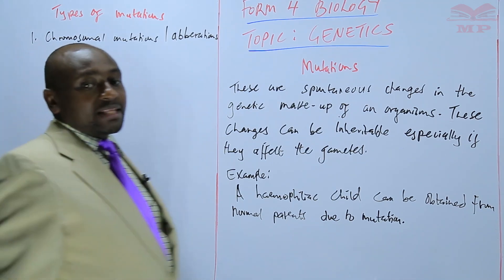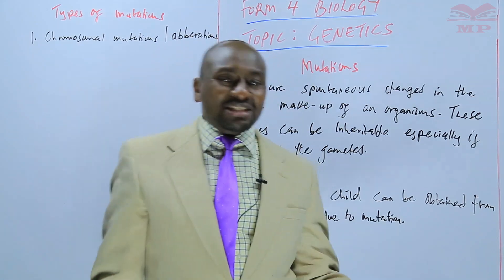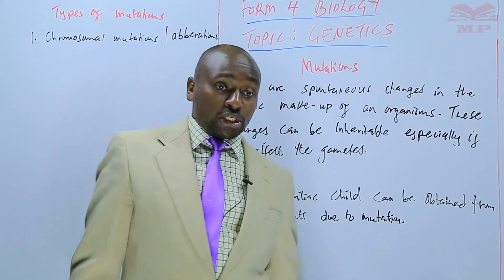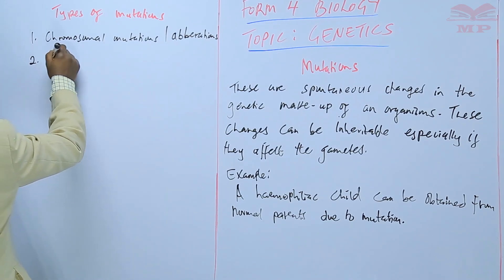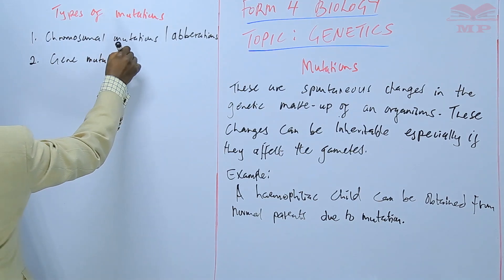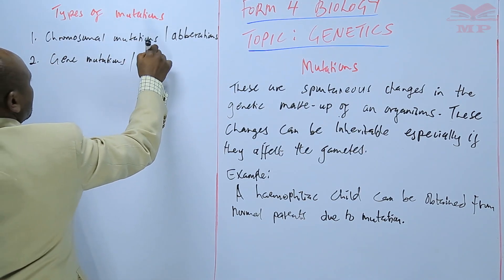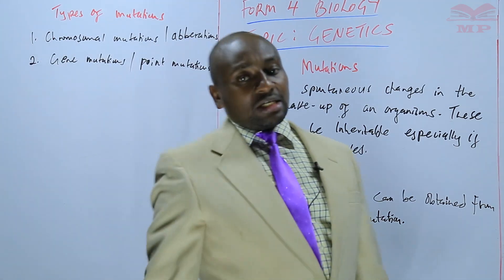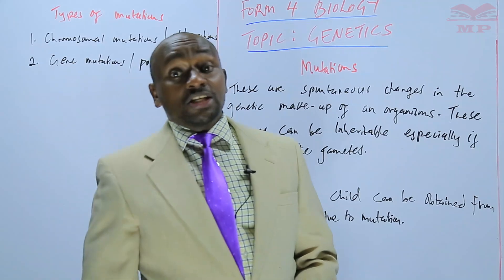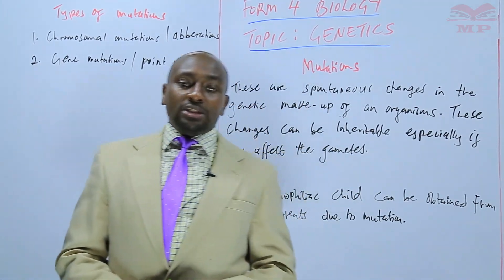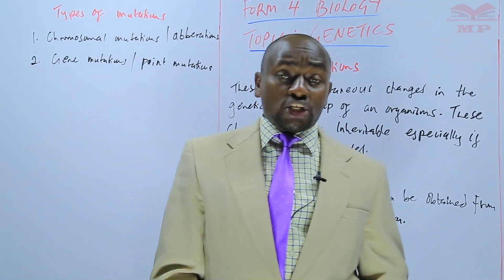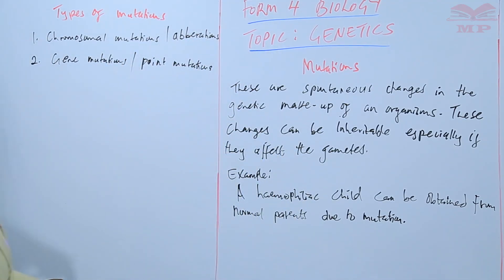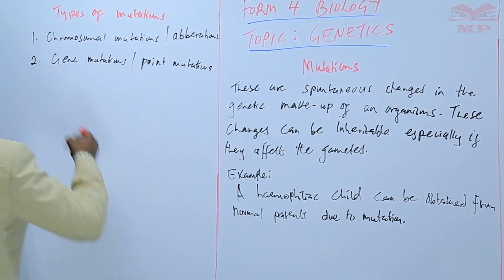Chromosomal mutations or chromosomal aberrations are the mutations that affect the chromosome — either the chromosome number, the chromosome structure, or they affect the chromatids. The chromatids make up a chromosome, so if the chromatids are affected, that is a chromosomal mutation. We also have number two: gene mutations, or point mutations. These are the mutations that affect the structure of the gene — for example, a change in the sequence of nucleotides. If there is a change in the sequence of nucleotides, especially the nitrogen bases, that can result in gene mutations. We are going to look at each one of them, starting with chromosomal mutations.